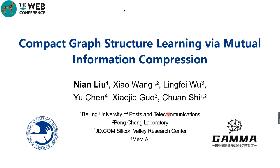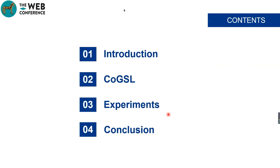Hello everyone, I am Nian Liu from Beijing University of Posts and Telecommunications, and I am very glad to share a new work with you. The title is Compact Graph Structure Learning via Mutual Information Maximization. Today, my presentation mainly includes four parts: the introduction, the proposed model CoGSL, some experiments, and finally some conclusions.